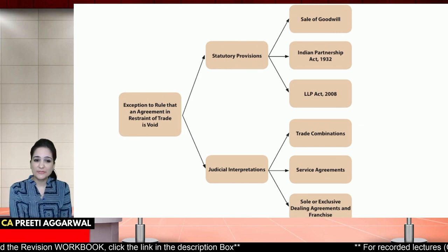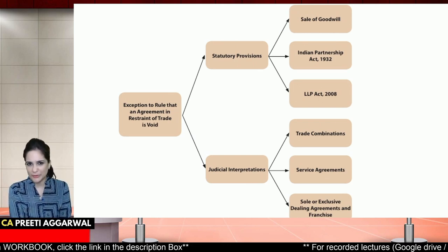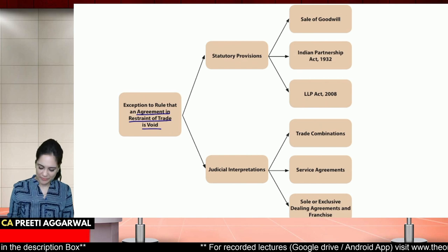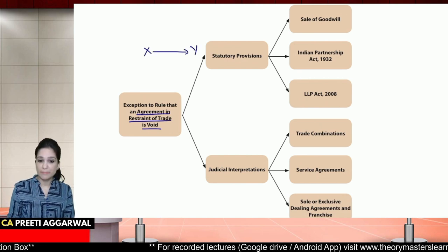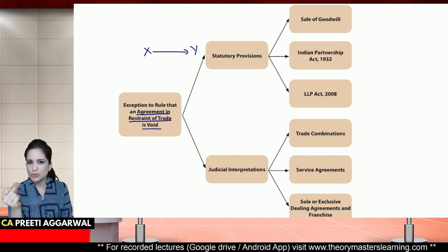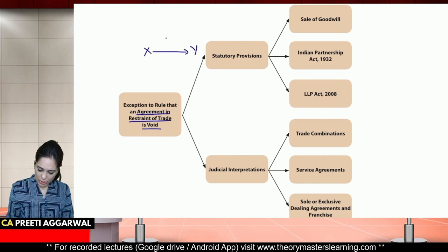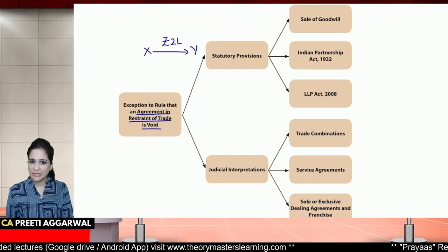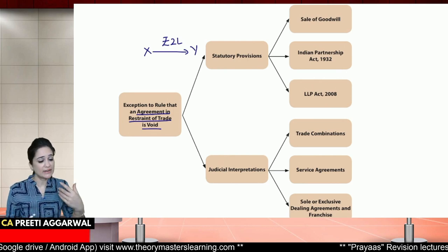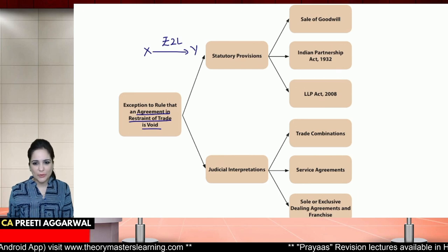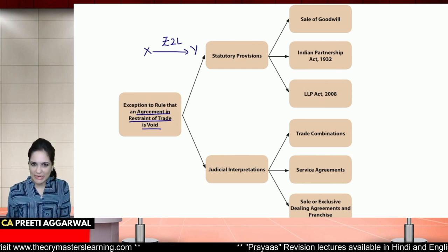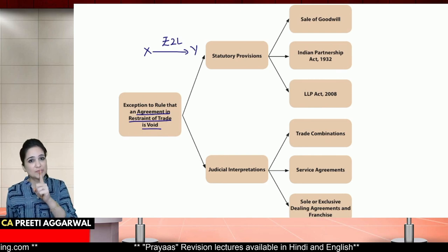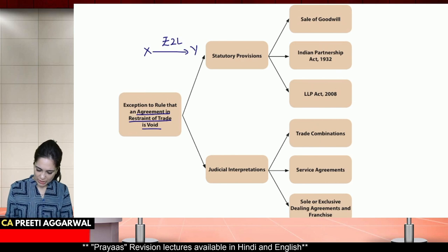Exceptions padhne se pehle, hum agreements in restraint of trade hota kya hai woh samaj lete hai, and whether it is valid or not. Agreements in restraint of trade, they are void. Ab ye hota kya hai? Let's say X tells Y, yeh mera area hai, yahaan par sirf mein hi business kar sakta hoon. Tu tera business band kara aur idher se ja. Do lakh rupae le aur apni shakal mat dikhana. So X is giving 2 lakh rupees to Y and asking him to shut his shop, close his business and move. Ab yahaan par law bolta hai, aap kisi ko aise lawful business, trade, profession karne se rok nahi sakte ho. India free country hai. Aap jo chahiye lawful business kar sakte ho. Aise restraining agreements, they are void — they are expressly void.